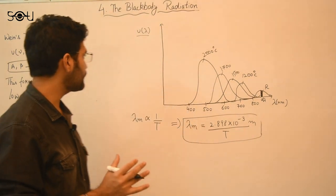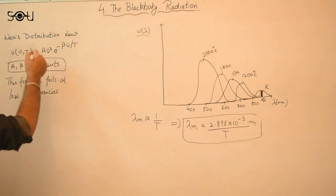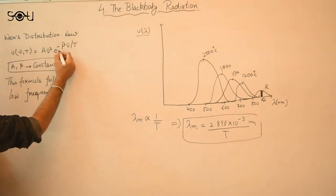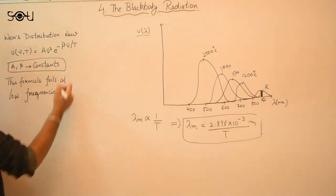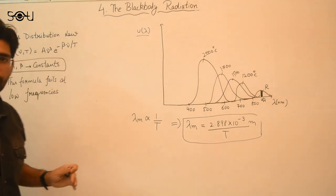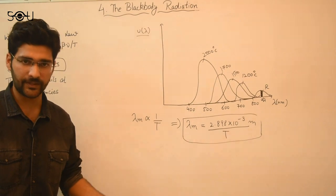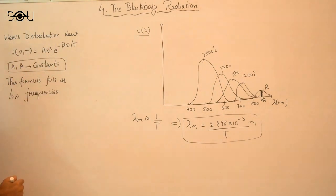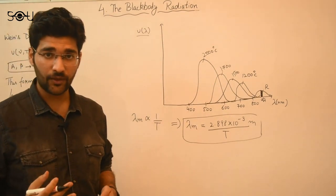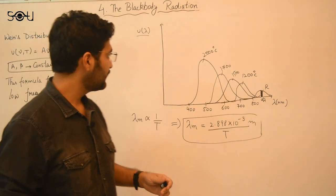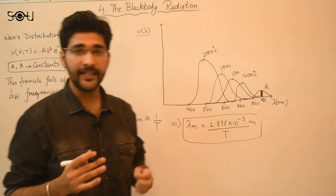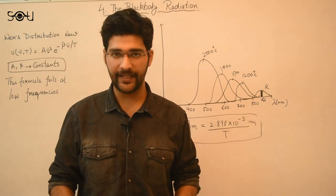The first attempt to find this mathematical relationship was made by Wilhelm Wien himself. Wien gave a distribution law: U(ν) = Aν³ e^(−βν/T), where A and β are constants. This is in terms of frequency, but you can also convert it into terms of wavelength. The only problem with this formula is that it does not explain the curve at low frequencies — it only explains the curve at high frequencies.